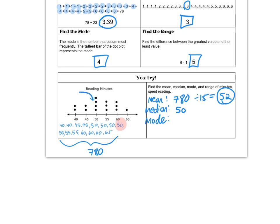Our mode is also 50 since that one occurs four times. It has the highest bar, and our range is 65 minus 40, which is 25. So there's your mean, median, mode, and range. Good job!